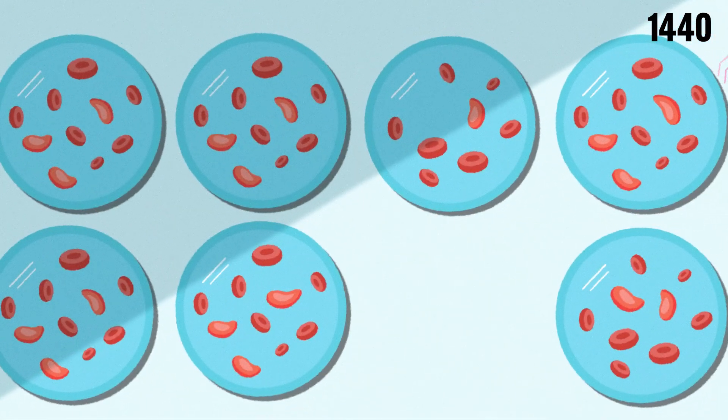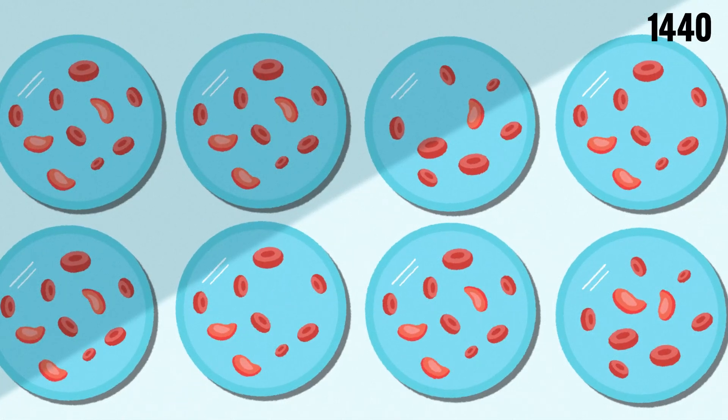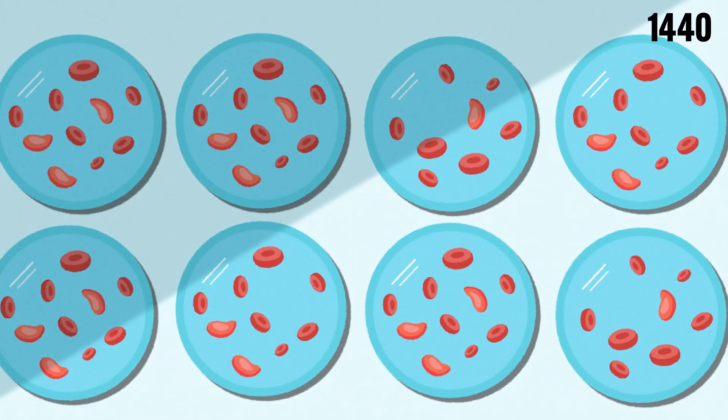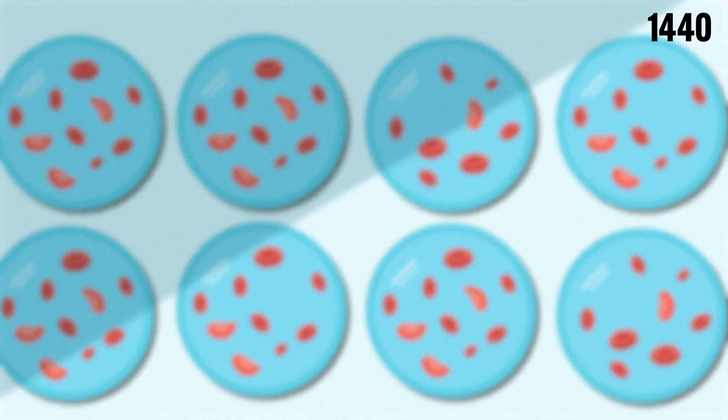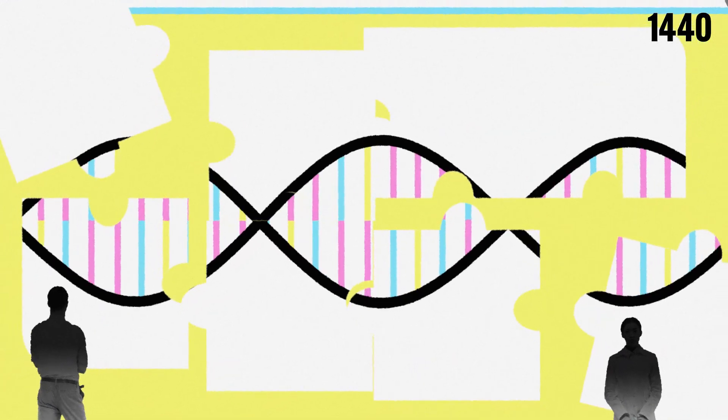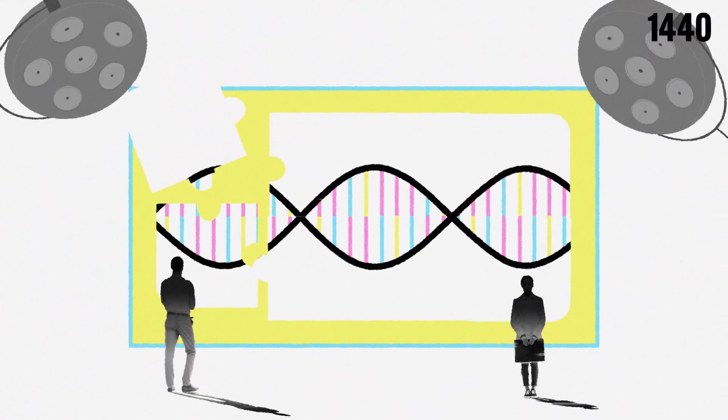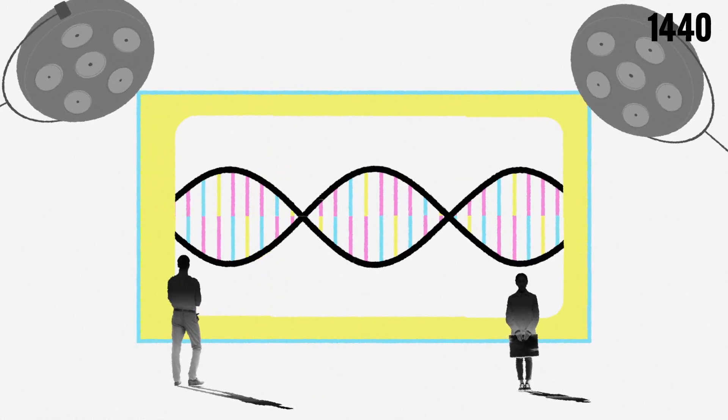The success in treating sickle cell disease, as well as the related condition beta-thalassemia, has fueled hopes that CRISPR can treat a wide range of diseases. Currently, dozens of clinical trials are underway using CRISPR to address everything from cancers to HIV, with the future of medicine being rewritten one gene at a time.